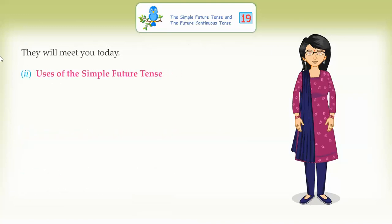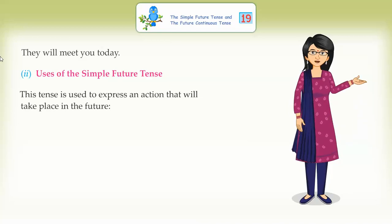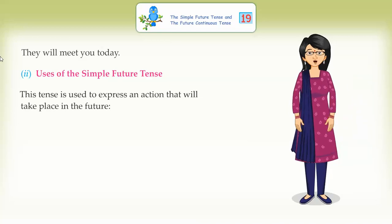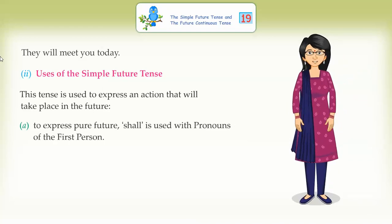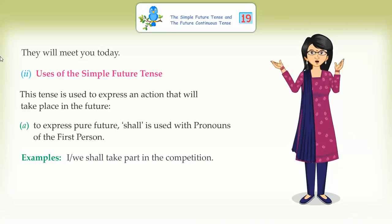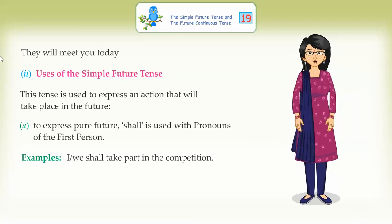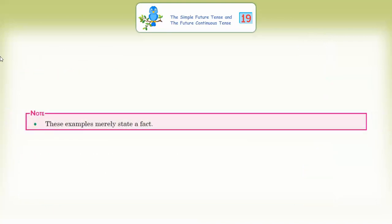Uses of the Simple Future Tense: This tense is used to express an action that will take place in the future. To express pure future, shall is used with pronouns of the first person. Examples: I/we shall take part in the competition. And will is used with all other subjects. Examples: you, he, she, it, they will help us. Note: these examples merely state a fact.